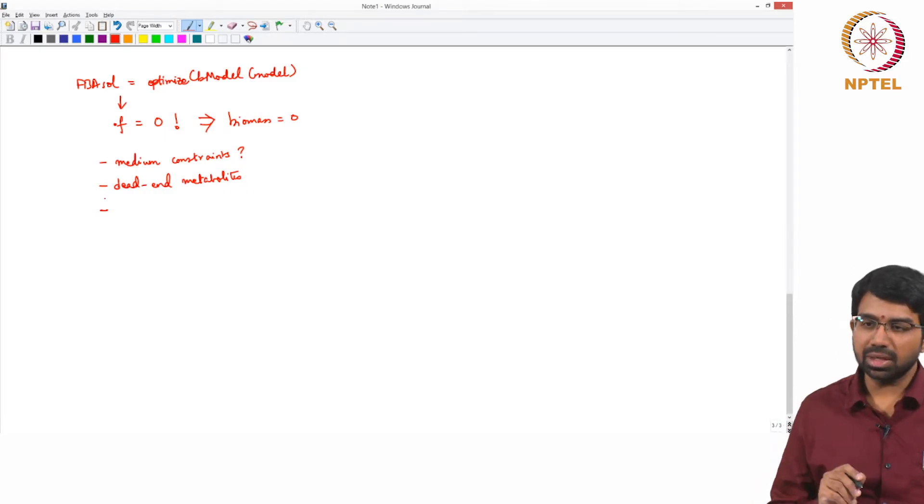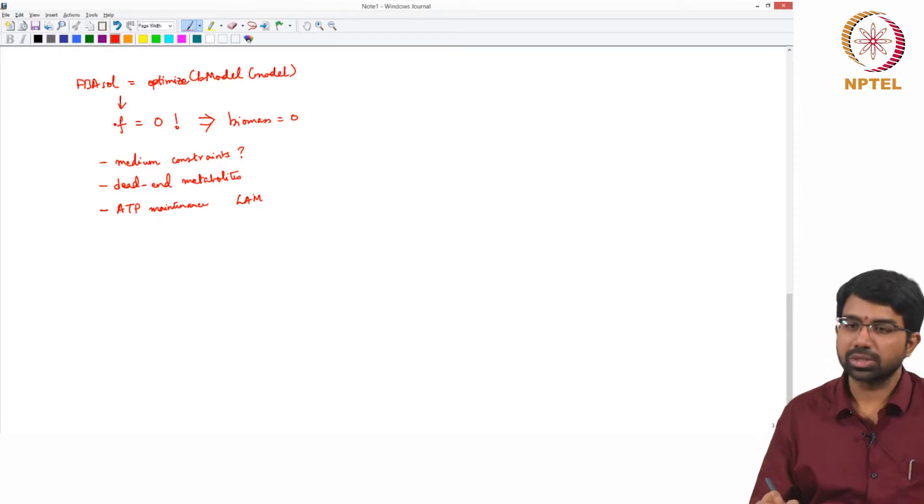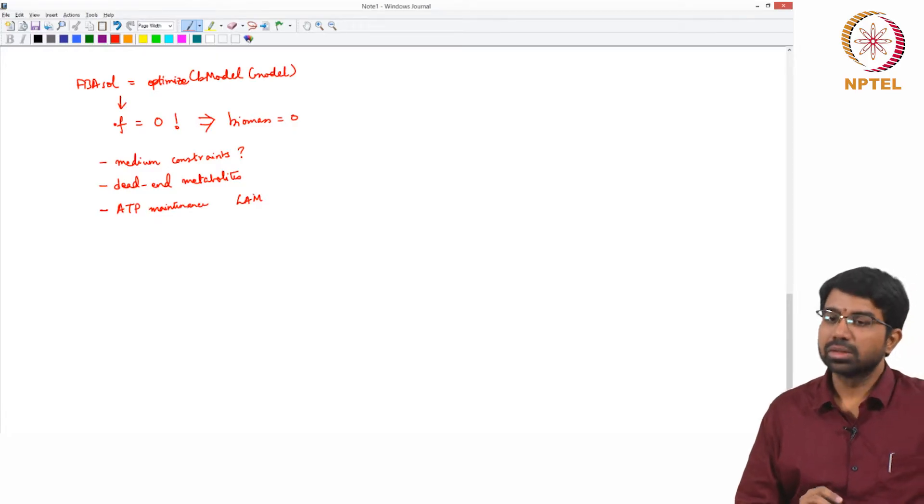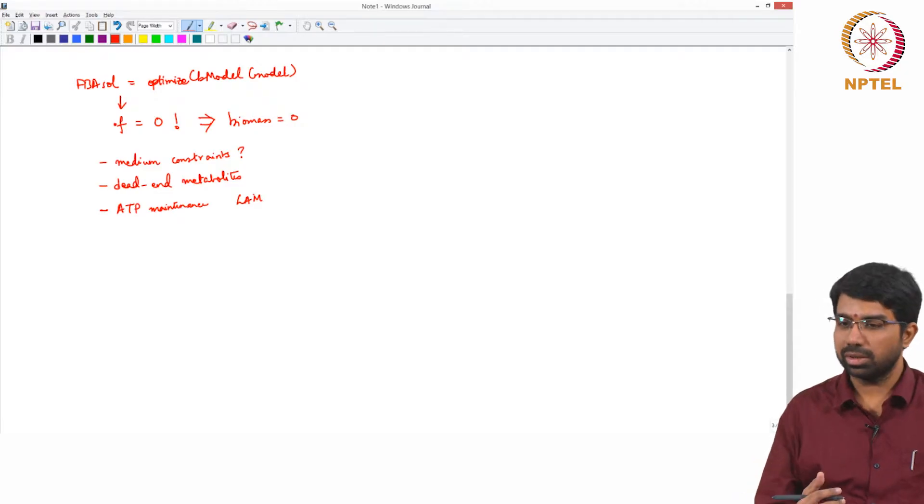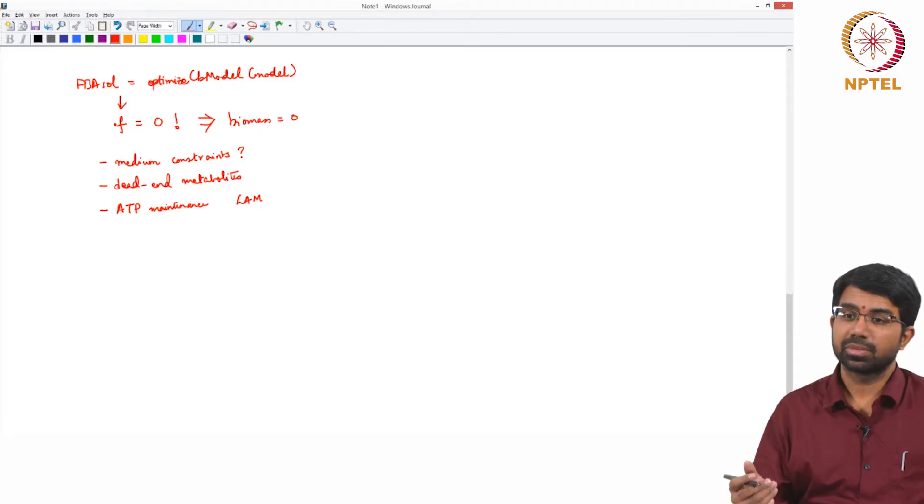But typically these are two major things. The third thing could be that there is usually an additional flux known as flux for ATP. So this can also go wrong. What is this? So you have something known as growth associated maintenance. There is obviously some ATP that is going into your biomass. We did see that in the biomass equation in the previous class. But in addition to this the cell may require some other ATP, some more ATP for sustaining other cellular function.